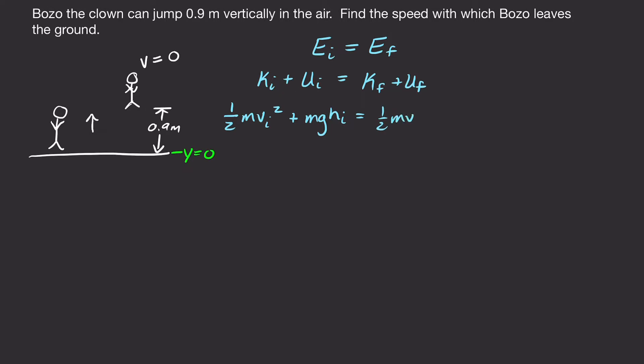Then we'll do the same thing for the final quantities. When Bozo jumps, initially he's jumping from the ground, so he's at y equals zero and his height is just zero. So our initial gravitational potential energy will be zero. And at the top of his jump, he's not moving, so his final velocity is zero, meaning he has no kinetic energy. This simplifies our expression a good bit.